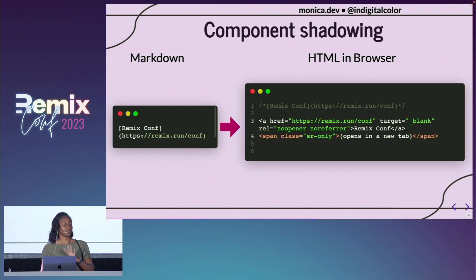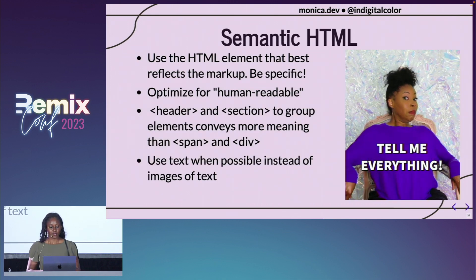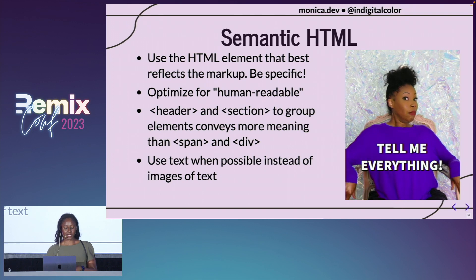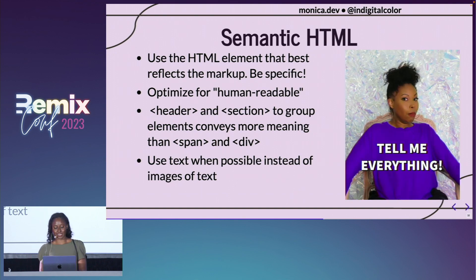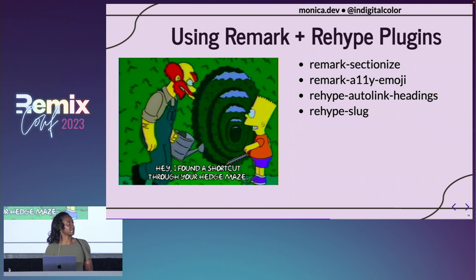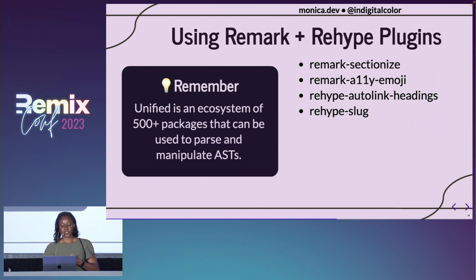In general, we want to make sure we're writing HTML that is more human-readable, because that's going to be more accessible for automated tools to navigate and decipher. It's good to avoid spans and divs which don't convey semantic meaning, and instead use one of the over 100 HTML elements that has more meaning. We should also use text when possible instead of images to convey information. We can leverage Remark and Rehype plugins to make the HTML our Markdown generates more semantic.